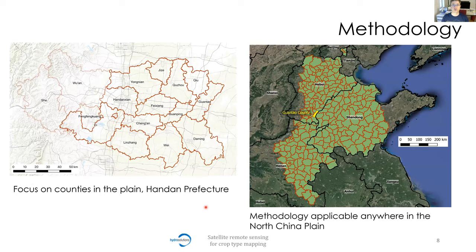The algorithm works best in the counties in the plain where there is little natural vegetation. In mountainous regions the algorithm is less powerful, as we cannot distinguish natural vegetation from agricultural fields. The methodology is applicable anywhere in the North China Plain, and the demonstration focuses on Handan Prefecture including Guantau County, our main study site visited several times over the last year.